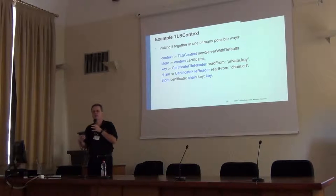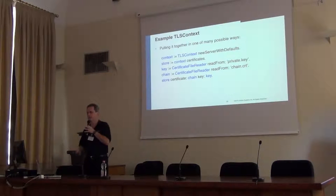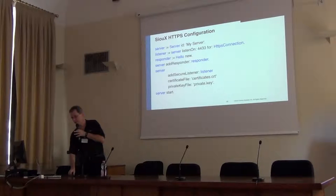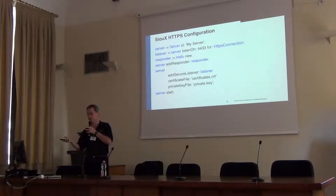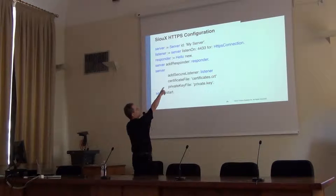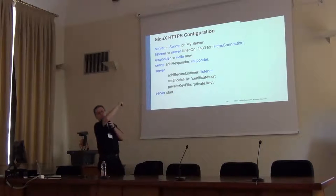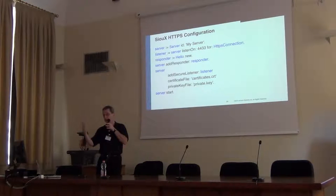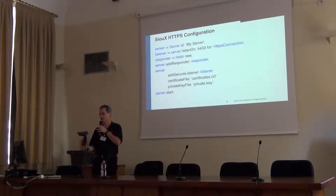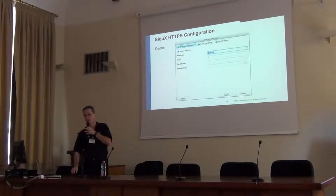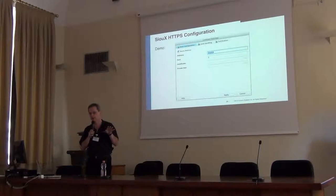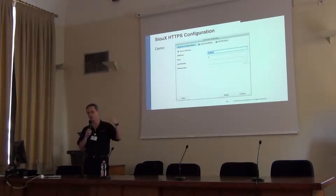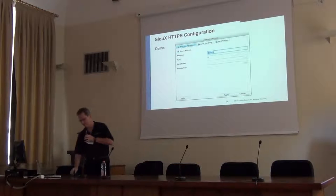Here is an example of how to start a secure server. You basically create one and say listen on this port for HTTPS connections — I didn't use the standard port 443 because I would need root privileges to do that. Then you add a responder, start the server, read the certificate, and there you go. It's a very simple, straightforward API. I started about four minutes late so I'm out of time — if you're interested, talk to me after and I can show you one of our tools for setting up the Cincom HTTPS server.